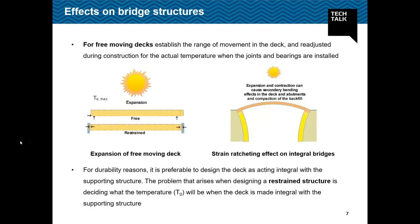Considering the effect on bridge structures, there are two conditions: free-moving decks — simply supported — and integral bridges. For free-moving decks, a range of movements in the deck is established and readjusted during expansion for the actual temperature when joints and bearings are installed. For integral bridges, for durability reasons it is preferable not to provide expansion joints or bearings, and to design the deck to act integrally with the supporting structure. The problem in designing such a restrained structure is deciding what mean temperature must be taken when the deck is made integral.